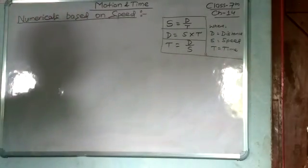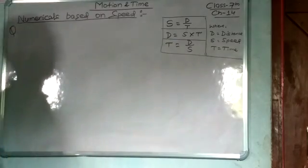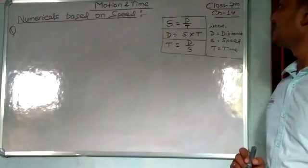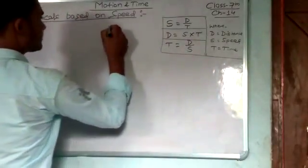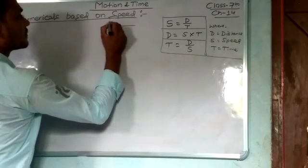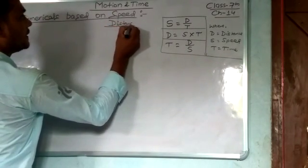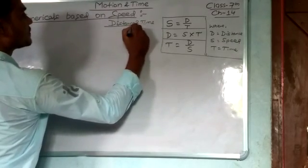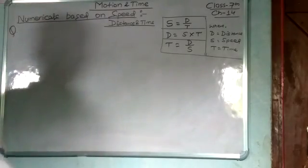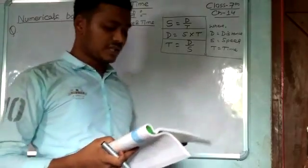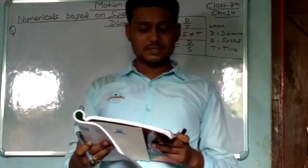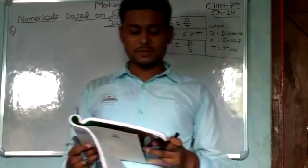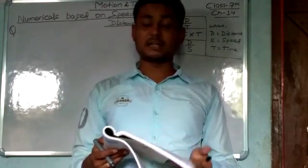Let us see some problems based on speed, distance, and time. The first question: the distance between Delhi and Chandigarh is around 250 kilometers. A bus takes five hours to travel from Delhi to Chandigarh. At what speed does it travel?